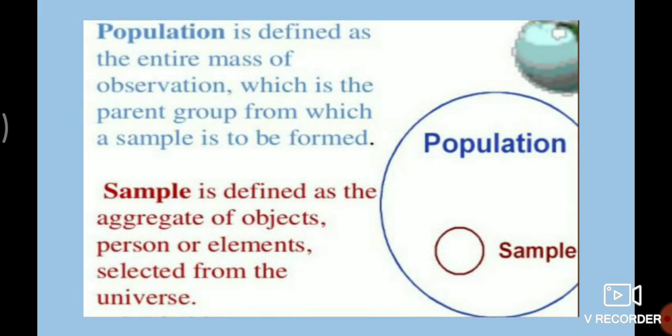Sample, Population, and Sample. Population means the entire mass of observation, which is the parent group from which the sample is to be formed. We observe the entire mass of the population. That is why we pick one or two. If we select that population, we select objects and sample objects. That may be a person or elements.